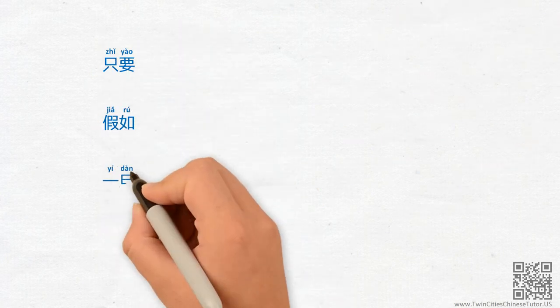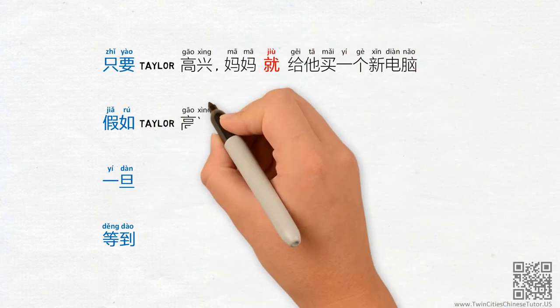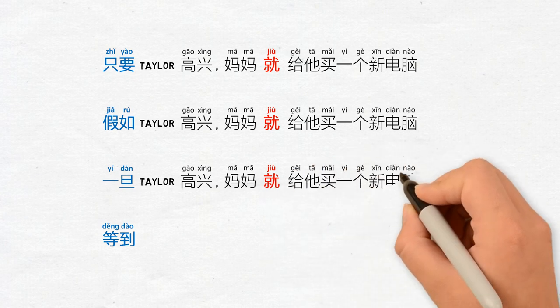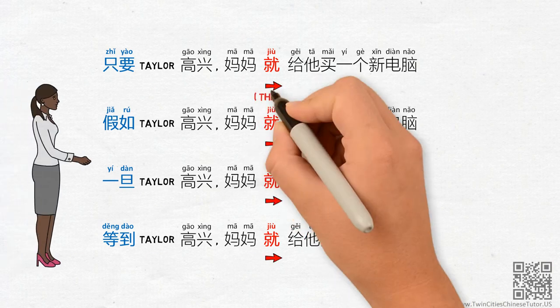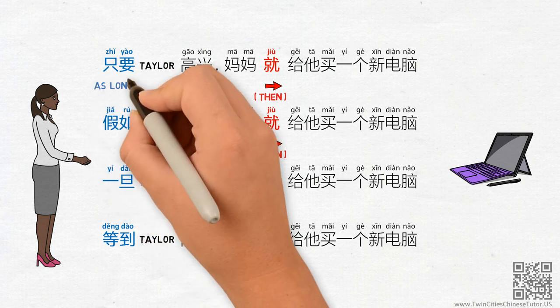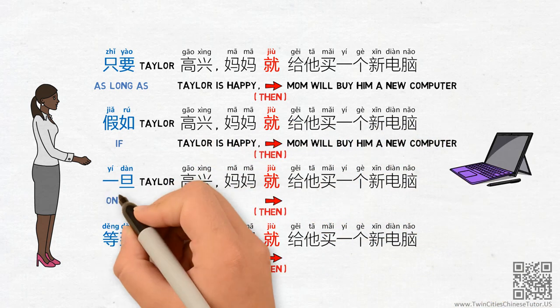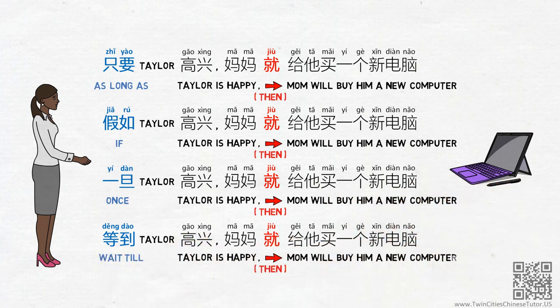Following the same logic, with jiu we often encounter partner words that offer more context. For example: 只要Taylor高兴，妈妈就给她买一个新电脑 — As long as Taylor is happy, then mom will buy him a new computer. 假如Taylor高兴，妈妈就给她买一个新电脑 — If Taylor is happy, then mom will buy him a new computer. 一旦Taylor高兴，妈妈就给她买一个新电脑 — Once Taylor is happy, then mom will buy him a new computer. 等到Taylor高兴，妈妈就给她买一个新电脑 — Wait till Taylor is happy, then mom will buy him a new computer.